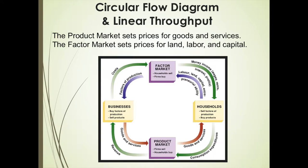Since all national income is used to purchase the national product — all goods and services — it must be true that national income equals national product. Notice the nature of the closed loop. National income from production creates the demand for the national product. Some economists like to say that supply creates its own demand — aggregate demand for products must just equal aggregate supply. We call this Say's Law. This provides us with an axiomatic accounting convention: the national product must just equal the national income. This is the view of the neoclassical model, a simple view without leakages or injections.